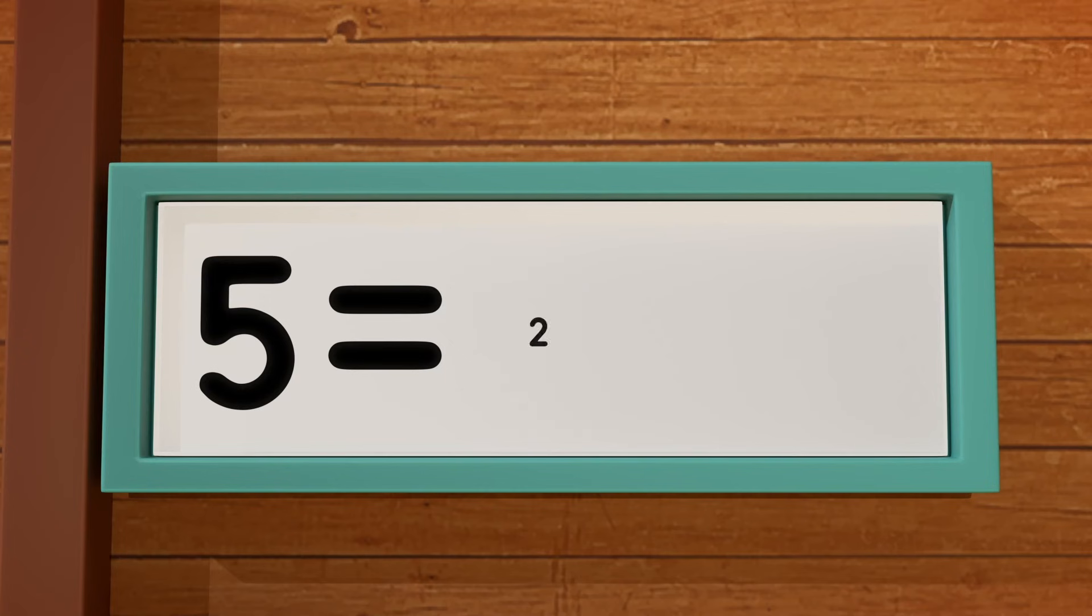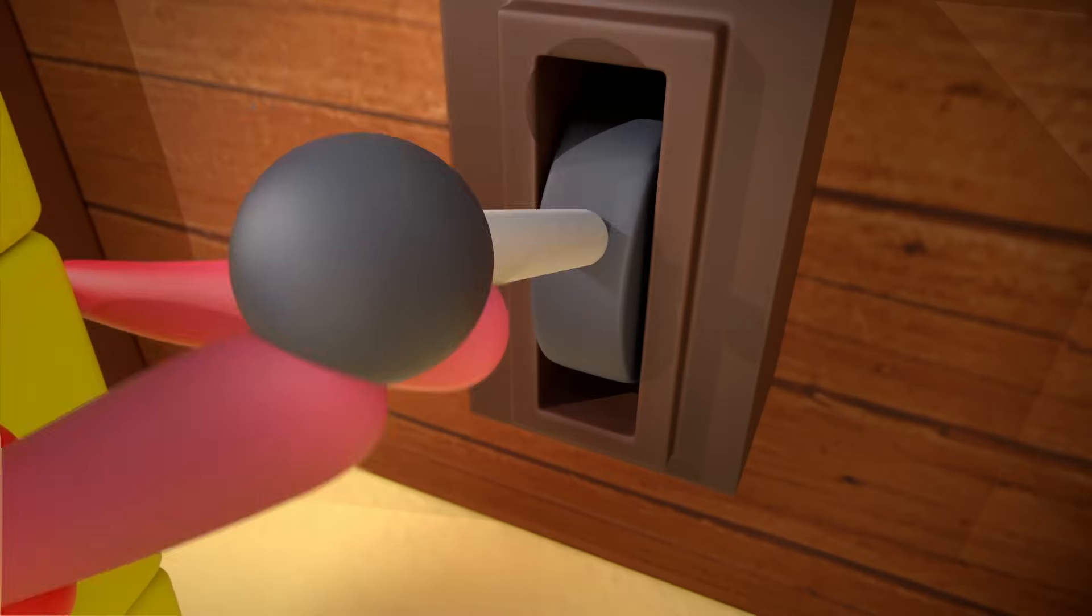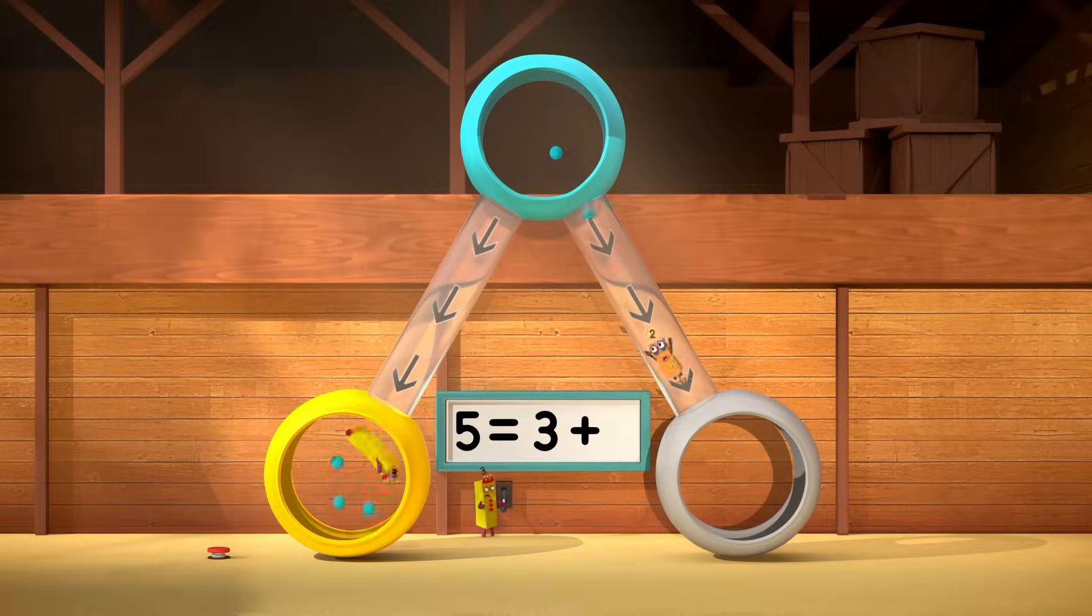Five equals two plus three. Two plus three equals five. It's going far too fast. Five equals three for action.